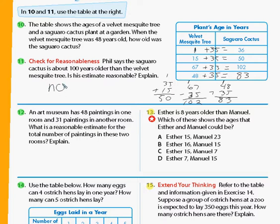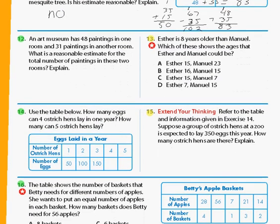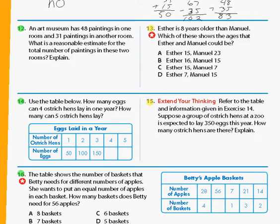Next problem we're going to work out is problem number 12. An art museum has 48 paintings in one room and 31 paintings in another room. What is a reasonable estimate for the total number of paintings in these two rooms? Since we got a word problem here, let's go ahead and box in. It says 'what is a reasonable estimate for the total number of paintings, total?' So we got total down here. That tells us it's going to be larger. I have 48 and I have 31 and they're both talking about paintings. That sounds like an addition problem.